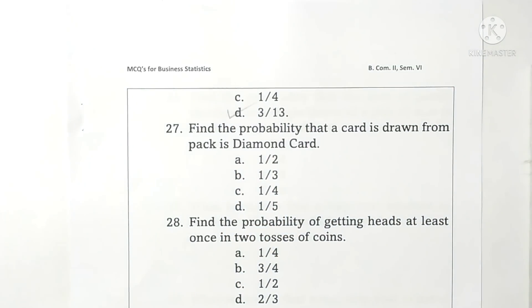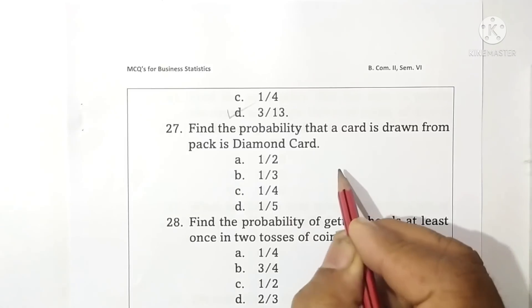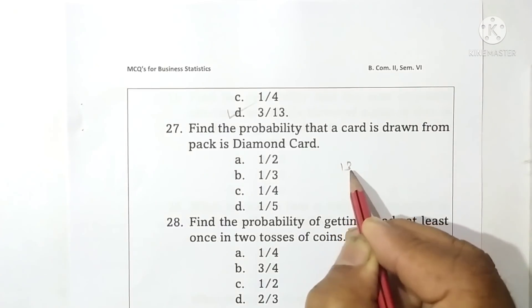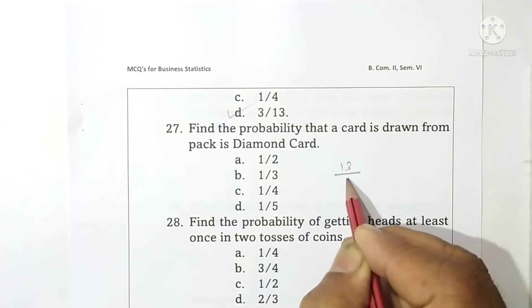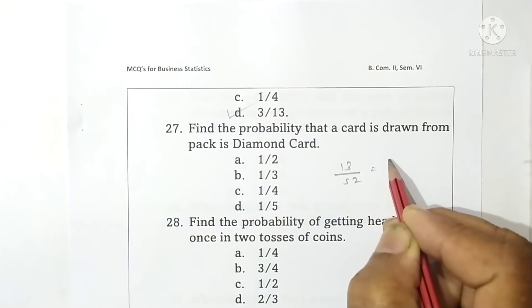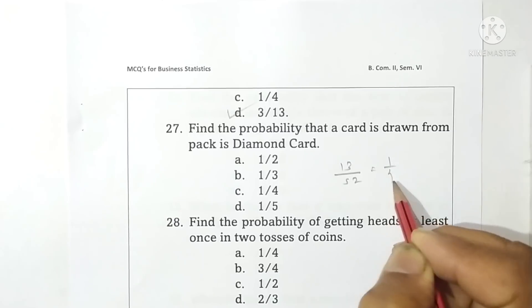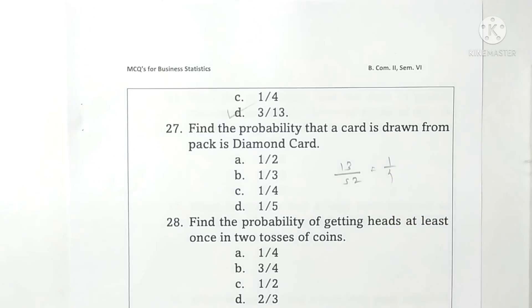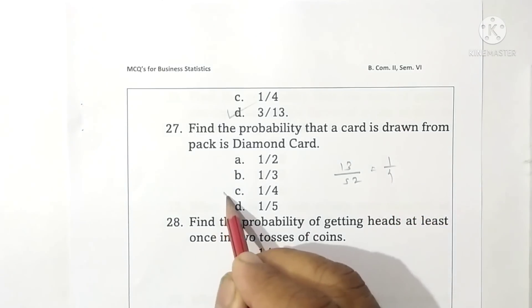Question 26: Find the probability that a card drawn from a pack is a picture card. Total picture cards are 12 and total cards are 52. Probability is 12/52 = 3/13. Option D is correct. Question 27: Find the probability that a card drawn from a pack is a diamond card. Diamond cards are 13 and total cards are 52. Probability is 13/52 = 1/4. Option C is correct.